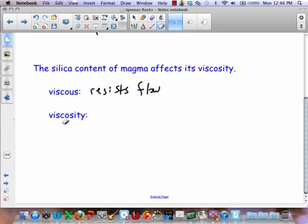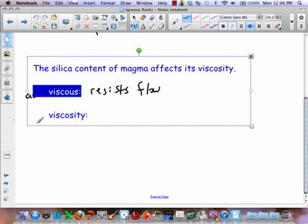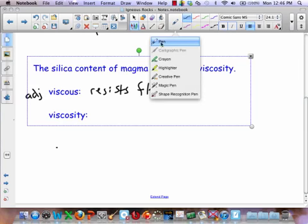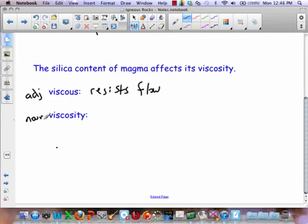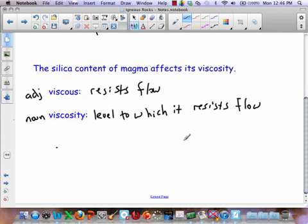Viscous means to resist flow. The viscosity, so this is more, we think about viscous, that's more your adjective. The viscosity of an object is its noun, it's a property. So when we talk about viscosity, it's the level to which it resists flow. So when I tell you that felsic magma has high viscosity, it means that it really doesn't like to flow at all. And when we talk about the fact that ultramafic magma has very low viscosity, it means that it flows pretty easily.